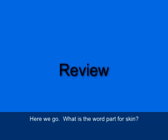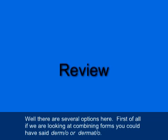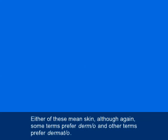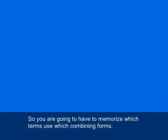What is a word part for skin? There are several options. If we're looking at combining forms, you could have said DERM/O — D-E-R-M slash O — or DERMATO — D-E-R-M-A-T slash O. Either of these mean skin, although some terms prefer DERM/O and other terms prefer DERMATO, so you'll have to memorize which terms use which combining form.